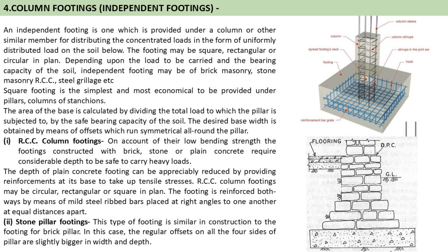Now discussing about column footings, also known as independent footings. There are two types: RCC column footing and stone pillar footing. An independent footing is one which is provided under a column or similar member for distributing the concentrated loads as a uniformly distributed load on the soil below. The footing may be square, rectangular, or circular in plan, and this is the most commonly used type of footing. Depending upon the load and bearing capacity of the soil, independent footing may be of brick masonry, stone masonry, RCC, or steel grillage.